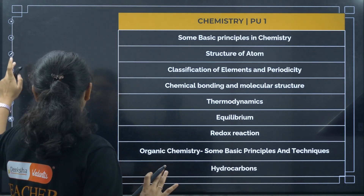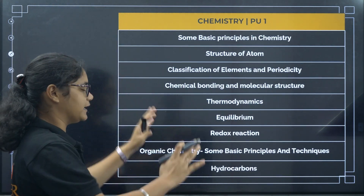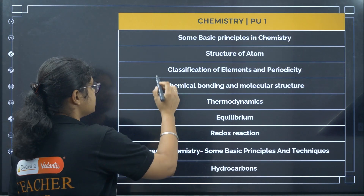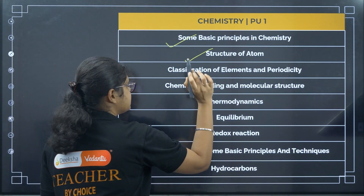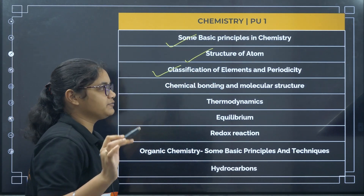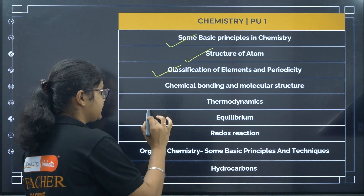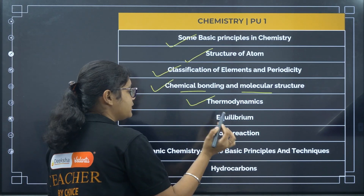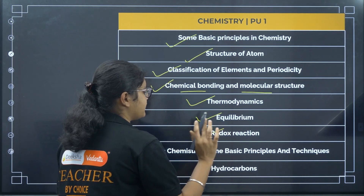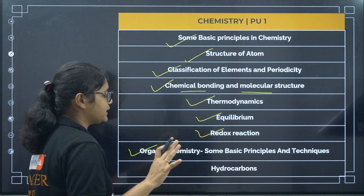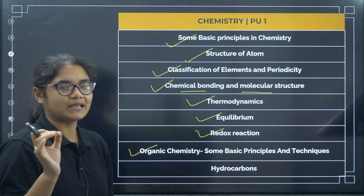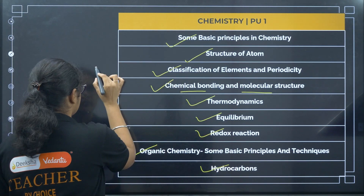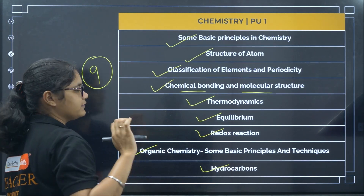First is the chapter list. We'll discuss the chapters from PU1 and PU2. The chapters from PU1 are: 1. Some Basic Concepts of Chemistry, 2. Structure of Atom, 3. Classification of Elements and Periodicity, 4. Chemical Bonding and Molecular Structure, 5. Thermodynamics, 6. Equilibrium, 7. Redox Reaction, 8. Organic Chemistry: Some Basic Principles and Techniques, and 9. Hydrocarbons. So there are nine chapters from PU1.